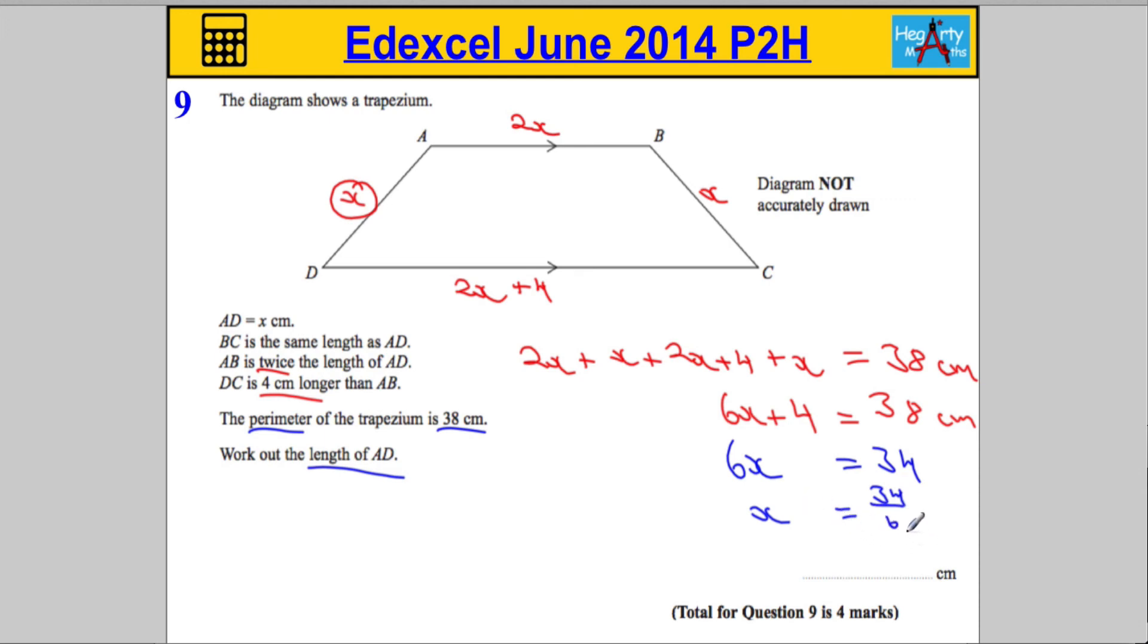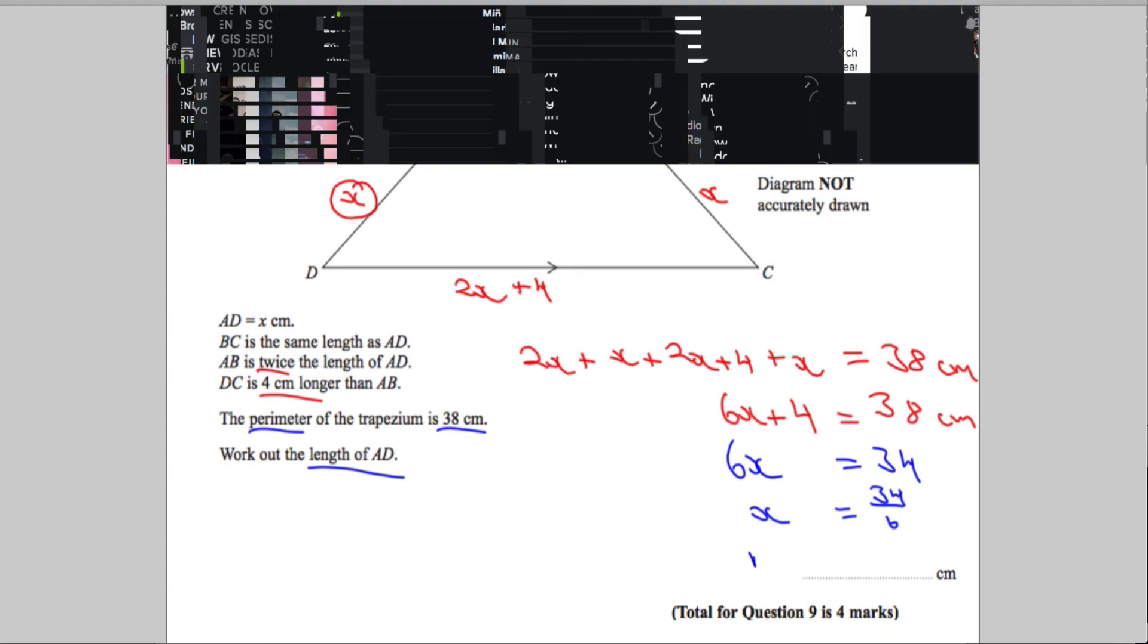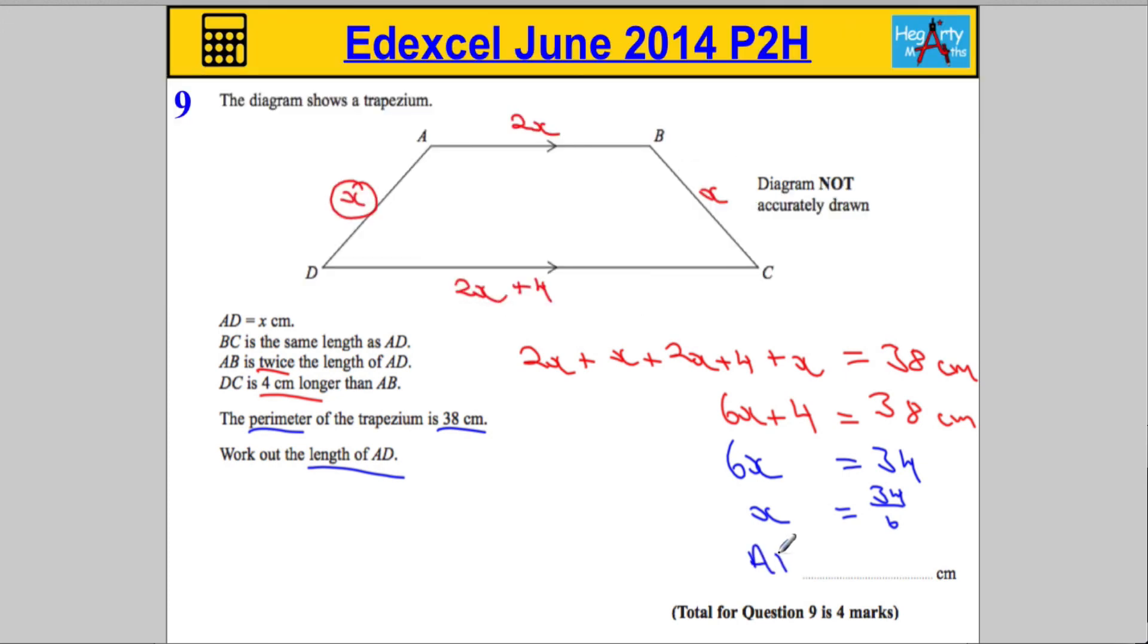Now, you can actually leave your answer like that. There is no need to simplify your answer. It didn't specify, give your answer in any particular way. I am, for the purposes of the question and for the viewers, just going to state that AD, if I simplify this, I know that's going to be 5 and 2 thirds. You could check that in your calculator if you wish, but essentially that's how we convert this from a top-heavy fraction to a mixed number.